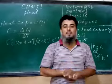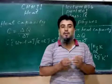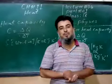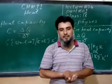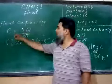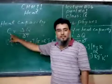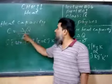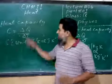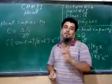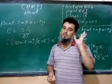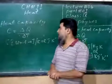The amount of heat required to raise the temperature of a substance is called heat capacity. The formula is delta Q divided by delta T. The ratio of change of heat to the change of temperature is called heat capacity.